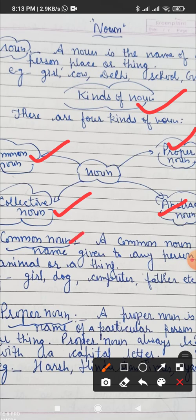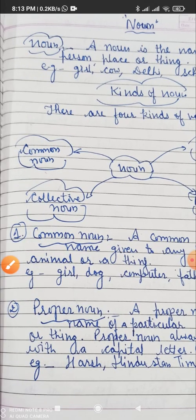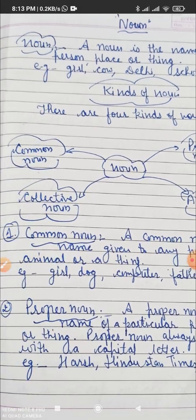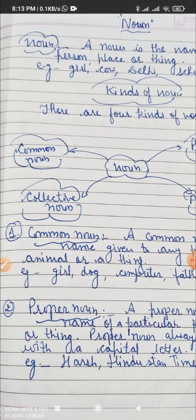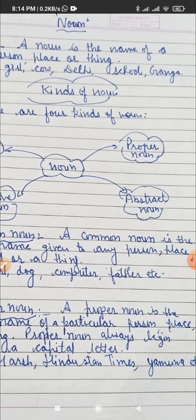Number one is common noun. A common noun is the name given to any person, place, animal, or a thing. Any common name, like 'girl' — girl means all the girls. 'Dog' — dog is a name given to all the dogs. Computer, father, etc.